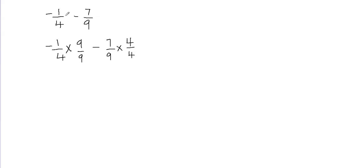So basically: I took my first fraction and multiplied it by the other fraction's denominator — 9 over 9. Then I took my second fraction and multiplied it by the first fraction's denominator, which was 4. So you multiply each fraction by the other fraction's denominator. Remember that you have to multiply both the numerator and the denominator by the same number.